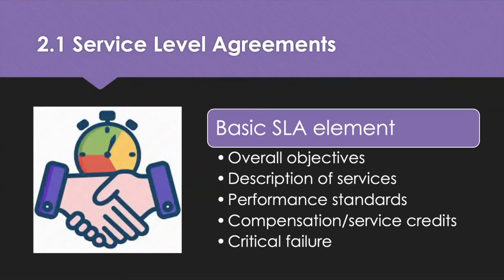When putting together your SLA, you think about your overall objectives — the services that need to be provided. The description would include the description of the service: where, by whom, and when. The performance section should clearly state the expected standard of performance. And compensation and service credits: for the SLA to be binding, there should be financial consequences in cases of failure to meet the standards. Critical failure is when service performance falls well below the expected level, and the customer could be required to pay for unsatisfactory overall performance.